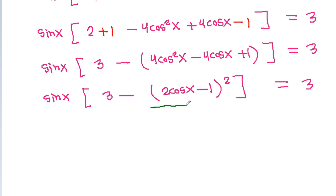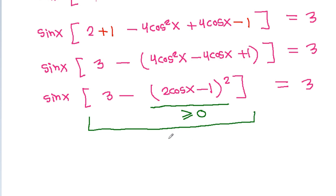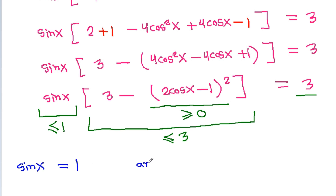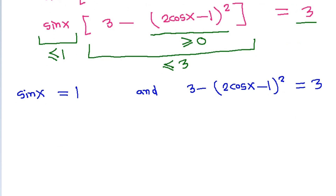And (2 cos x minus 1) whole square is greater than or equal to 0, so 3 minus (2 cos x minus 1) whole square will be less than or equal to 3. And sin x is less than or equal to 1, and their product equals 3. That means sin x must equal 1, and 3 minus (2 cos x minus 1) whole square equals 3. If sin x equals 1, then x equals pi by 2.